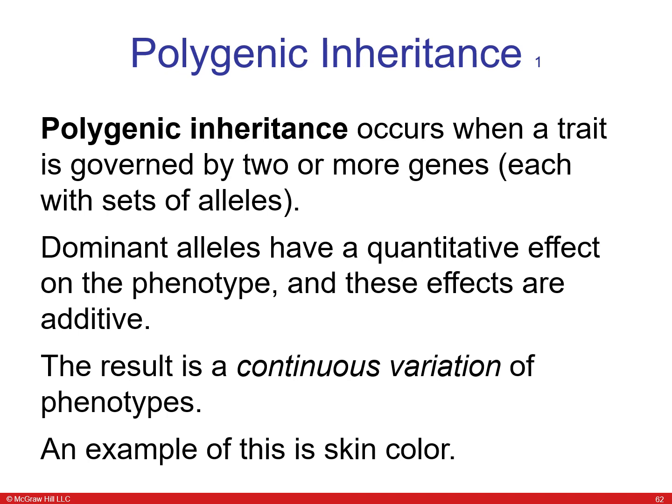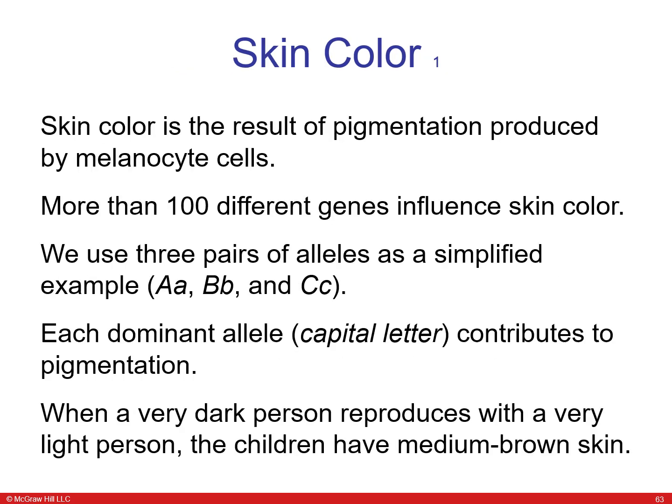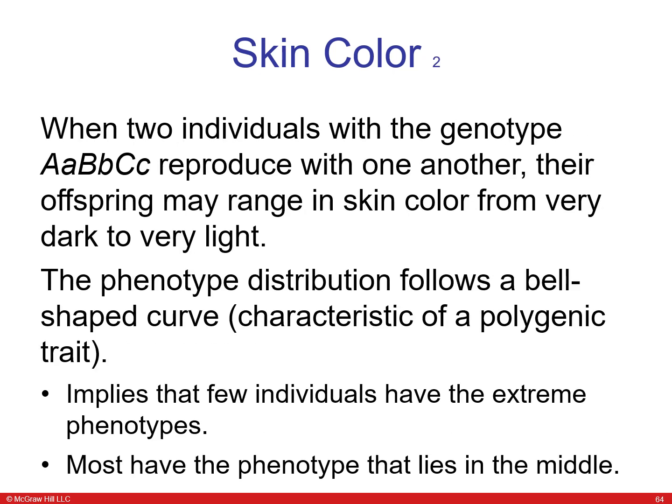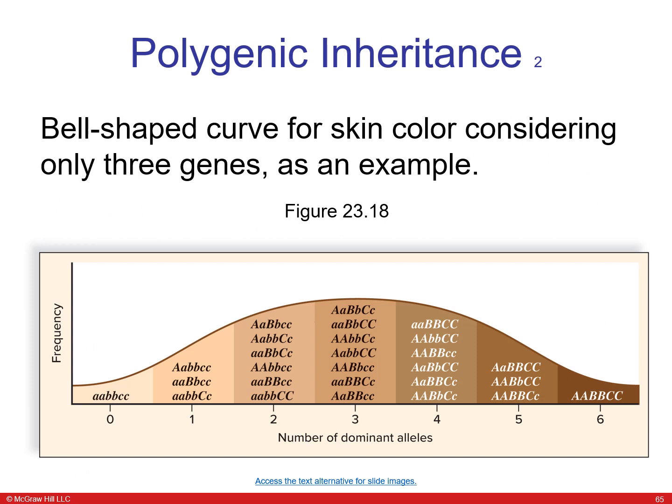Polygenic inheritance occurs when a trait is governed by two or more sets of genes, resulting in continuous variation of phenotypes. A good example is skin color — over a hundred different genes influence skin color, producing great variation among people and their offspring. Diagrams show variation in skin color and polygenic inheritance, and a graph demonstrates that people range from very light to very dark skinned depending on the number of dominant alleles.